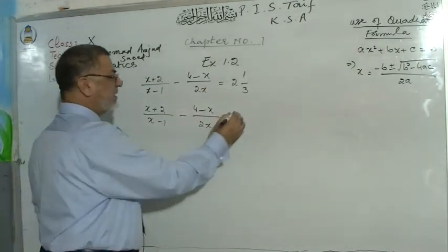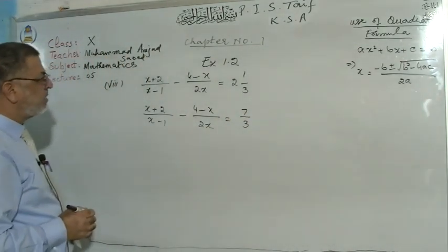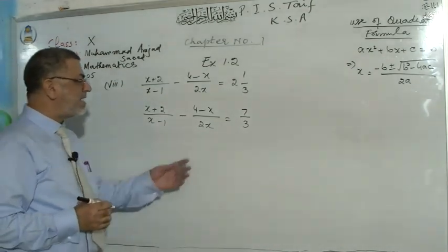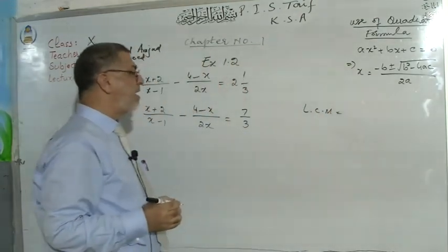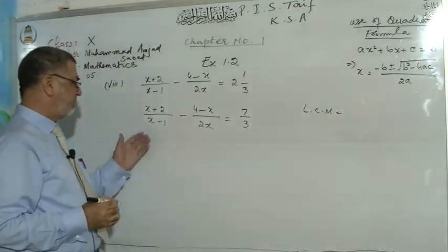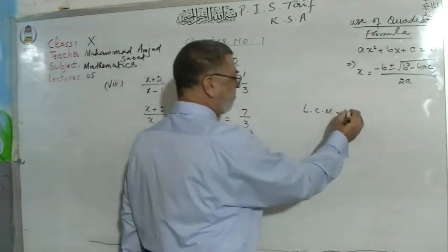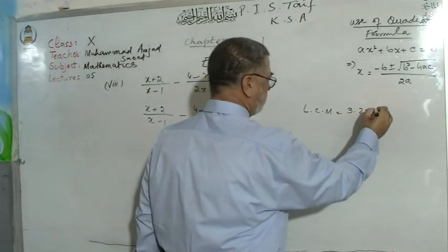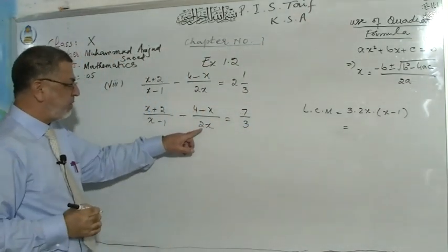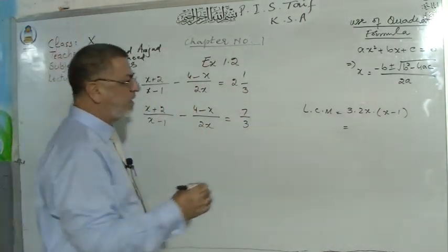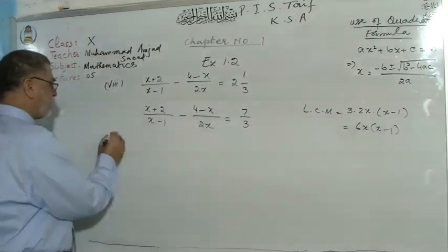What is the LCM? The LCM is the product of non-common factors. Because we don't have any common factors, they are all non-common, so they are multiplied to get the LCM: 3 × 2x × (x−1), which is 6x(x−1).